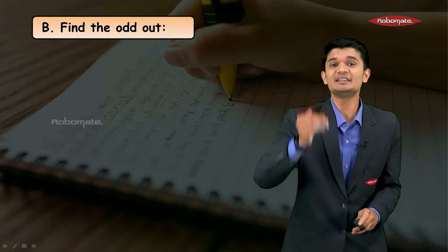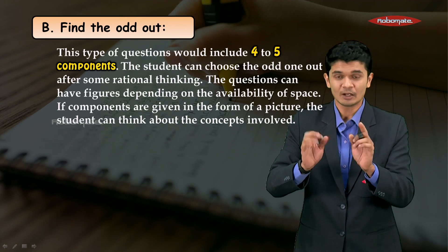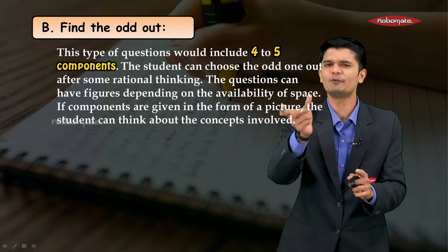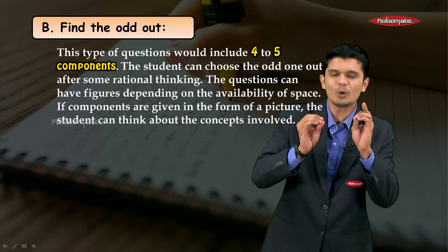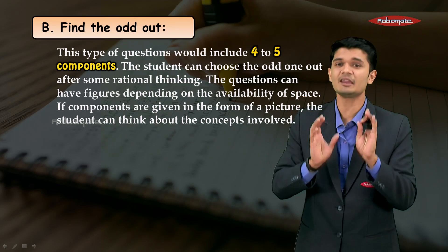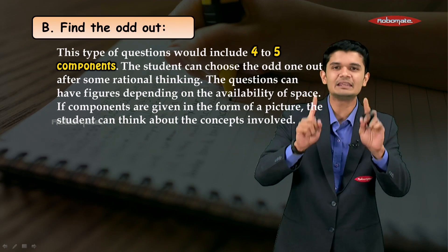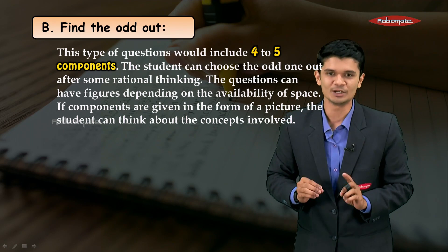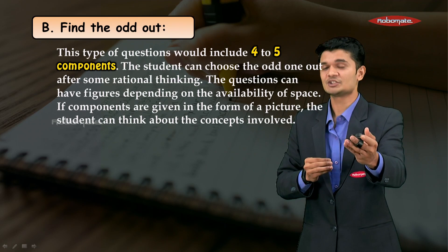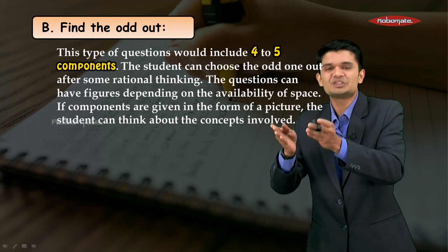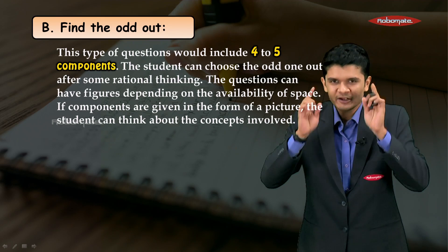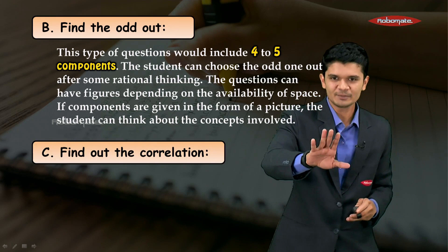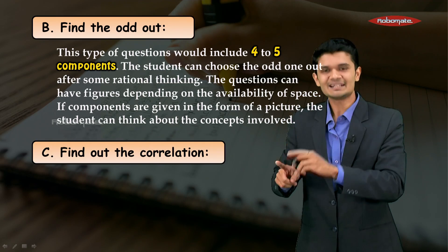The next section is find the odd man out. These questions might have four to five components or words in them. You have to read these options very carefully and with rational thinking, find who is the odd one out based on the concepts related to those words. Sometimes these questions may appear in the form of pictures — observe the picture very carefully, find the concept related to it, and then find out who is the odd man out.